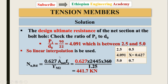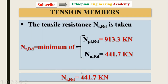Inserting the numbers into the formula gives the design ultimate resistance of the net section at the bolt hole. The tensile resistance is then taken as the minimum of the design plastic resistance and the design ultimate resistance. The minimum value is the design ultimate resistance, which equals 441.7 kN.